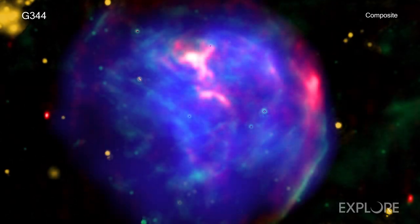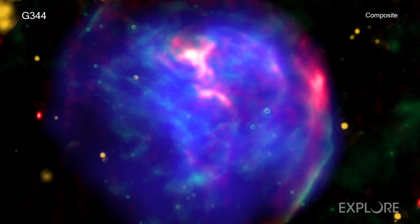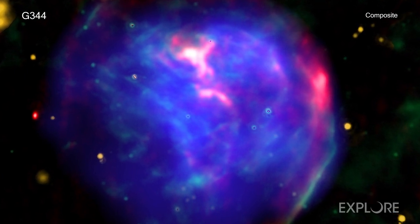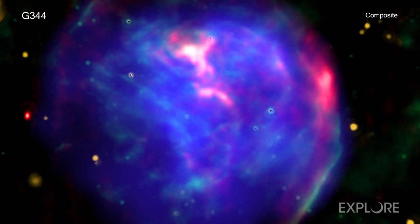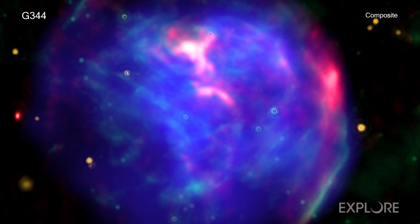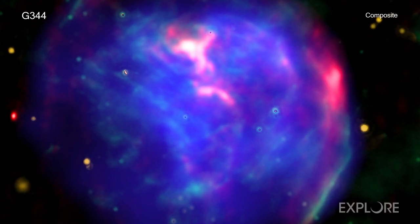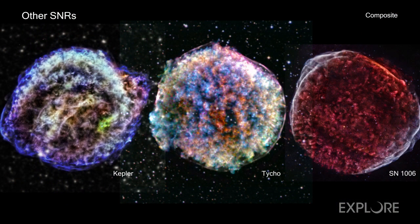The supernova remnant G344.7-0.1 is useful to study because astronomers think it is about 3,000 to 6,000 years old in Earth's time frame. This makes it significantly older than most of the well-known and widely observed Type Ia remnants, including Kepler, Tycho, and SN 1006, which have all exploded within the last millennium or so as seen from Earth.